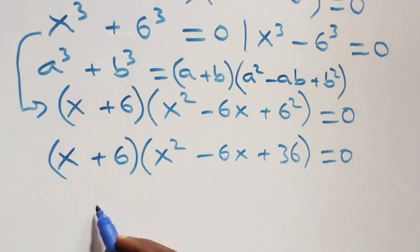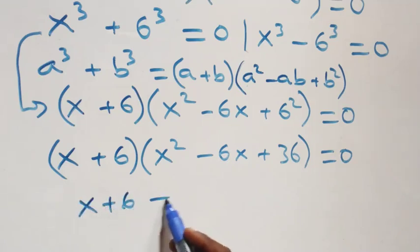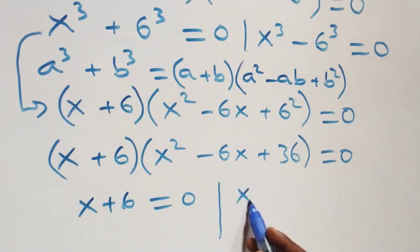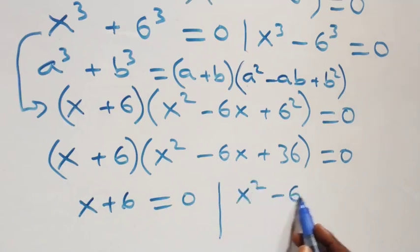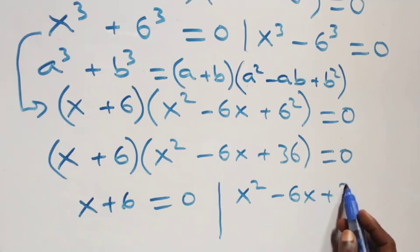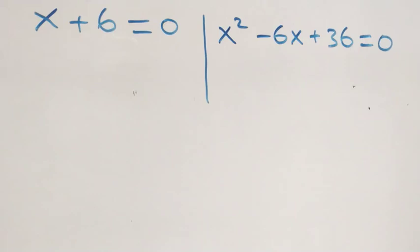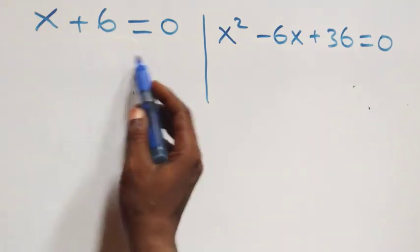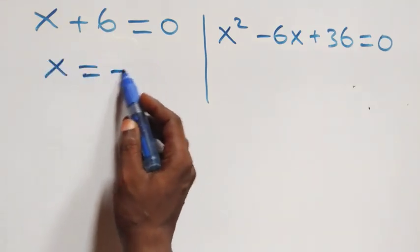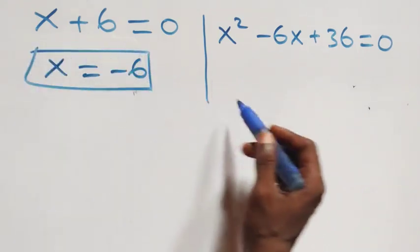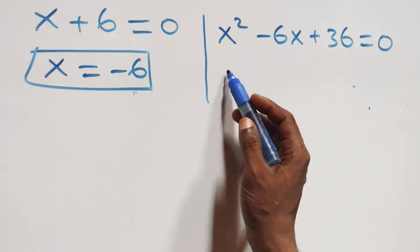We now have two possible sub-cases. The first gives x + 6 = 0, or we have the quadratic x^2 - 6x + 36 = 0. Solving the first sub-case gives x = -6, which is a real solution.